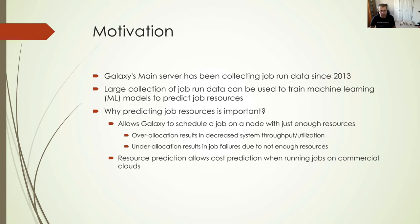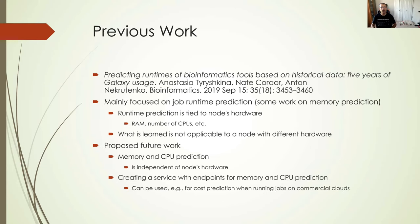If we are over allocating, we're going to have reduced system throughput utilization. If we are under allocating, then we might have job failures due to not enough resources being available. So allocating just enough resources for a job is important. Also, resource prediction allows cost prediction. When we want to run our jobs on commercial clouds like AWS, they are doing some research on how much it costs to run tasks on the cloud, given different combinations of the hardware that's available.